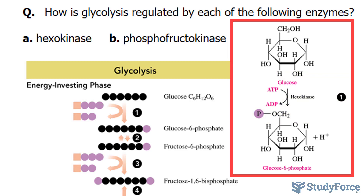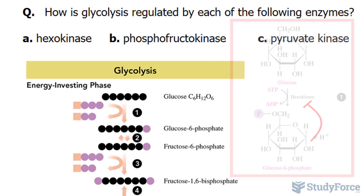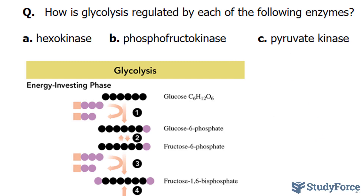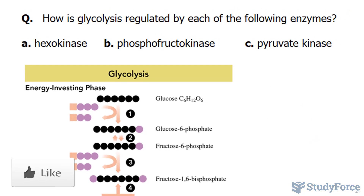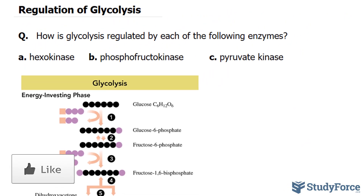So when a lot of glucose 6-phosphate is formed, this eventually causes a negative feedback loop to stop the addition of more phosphate groups being added to glucose. Therefore, what stops hexokinase is glucose 6-phosphate.